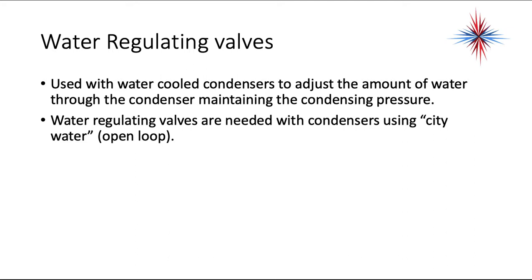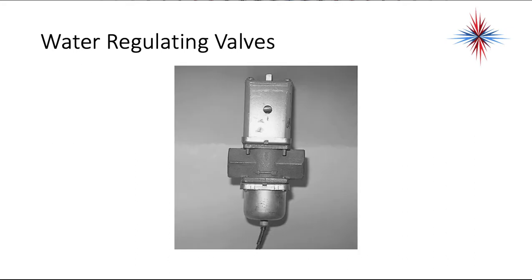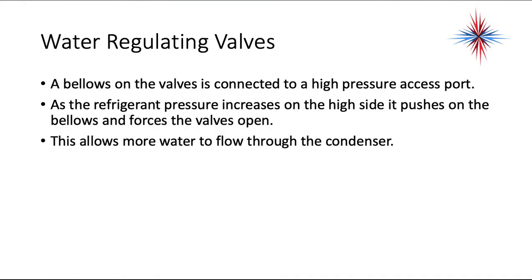Water regulating valves are used with water-cooled condensers to adjust the amount of incoming water through the condenser to maintain condensing pressure. They are required on open-loop systems using city water and are directional — water must flow in the direction of the arrow. A bellows on the valve is connected to the high-pressure access port. As refrigerant pressure increases on the high side, it pushes on the bellows and forces the valve open, allowing more water to flow through the condenser.